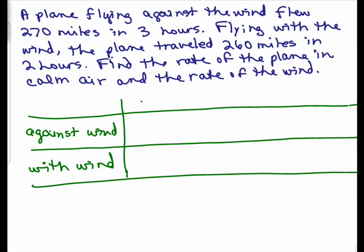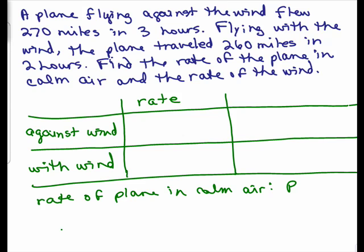Now we want to find the rate, the actual rate the plane is going. But there's a trick here. There's two different rates. There's the rate of just the plane, but the wind also has to be factored in. So we need to use two variables: the rate of plane in calm air, let's call that P, and the rate of the wind, let's call that W.